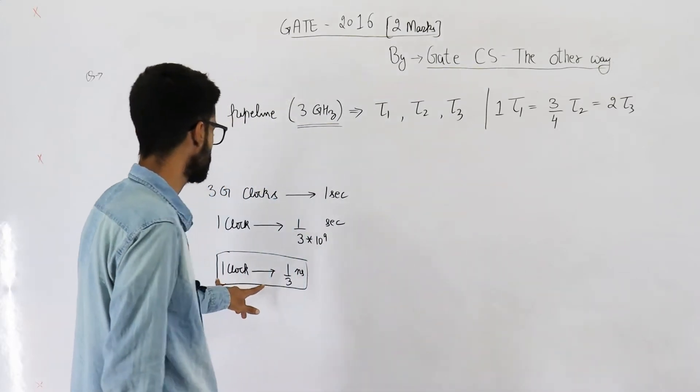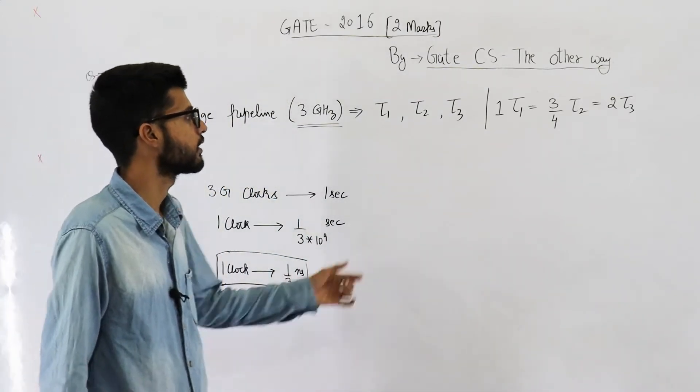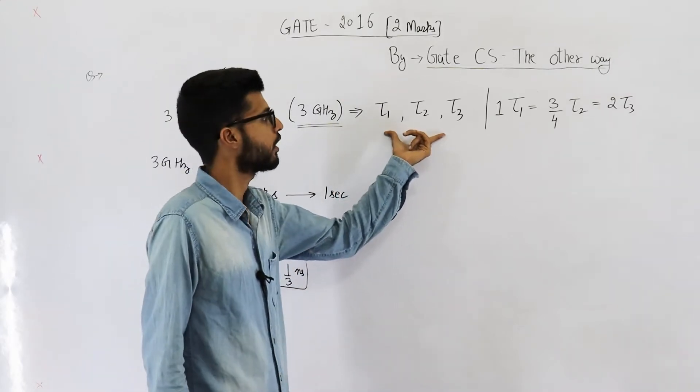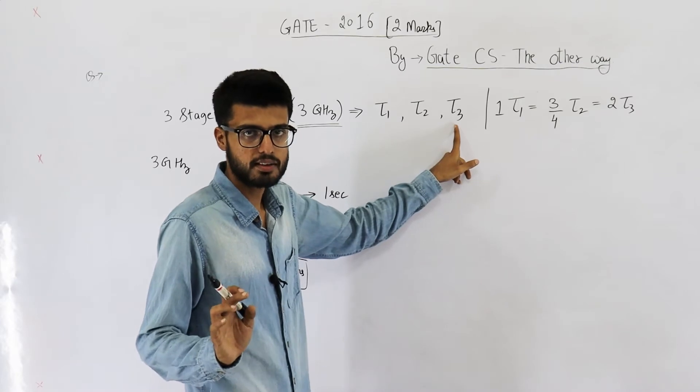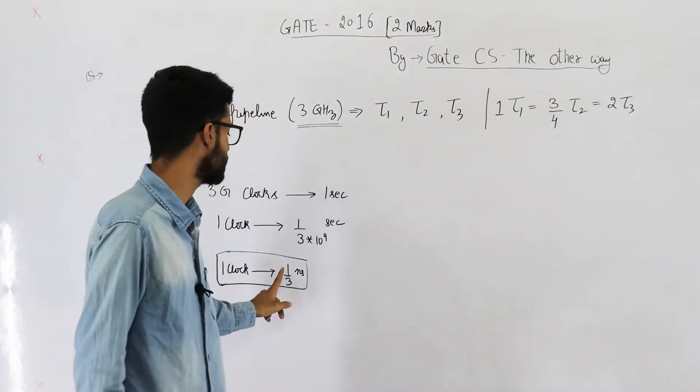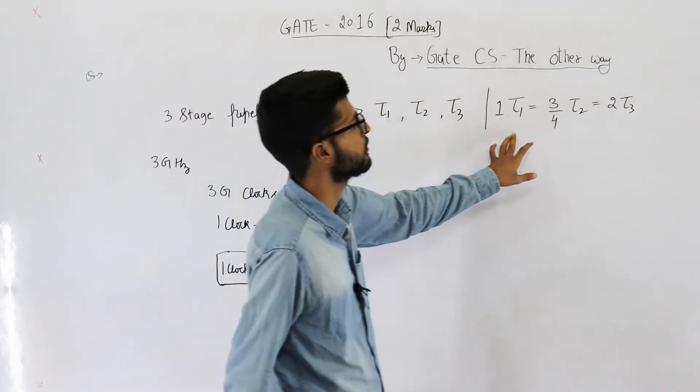And you also know that time period of clock depends upon the stage with the largest delay. So, out of these three, the stage with the largest delay will have delay of 1 by 3 nanoseconds. Let's now analyze this equation.